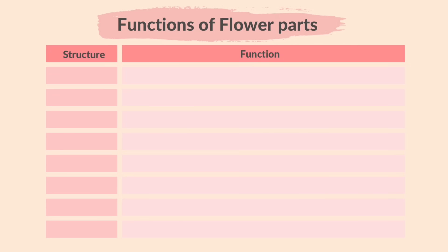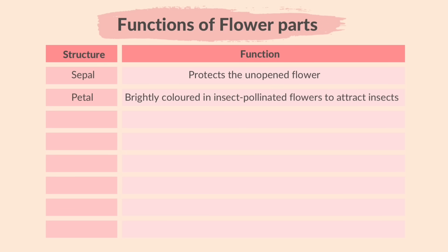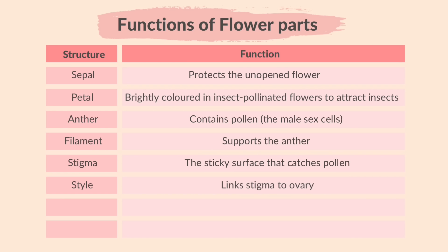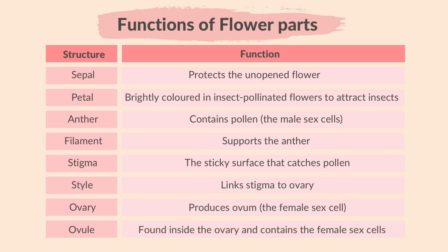The functions of the flower structures are: the sepal protects the unopened flower; petals are brightly coloured in insect-pollinated flowers to attract insects; the anther contains pollen — the male sex cells; the filament supports the anther; the stigma is the sticky surface that catches pollen; the style links the stigma to the ovary; the ovary produces the ovum — the female sex cell; and the ovule is found inside the ovary and contains the female sex cells.